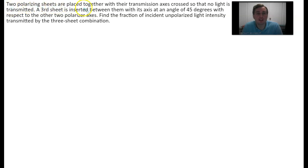Two polarizing sheets are placed together with their transmission axes crossed so that no light is transmitted. A third sheet is inserted between them with its axis at an angle of 45 degrees with respect to the other two polarizer axes. Find the fraction of incident unpolarized light intensity transmitted by the three sheet combination.